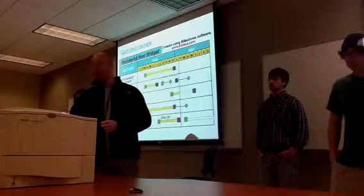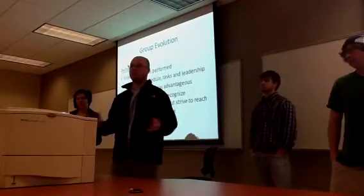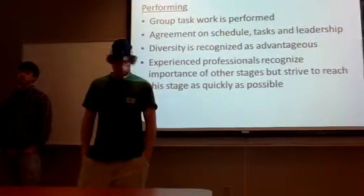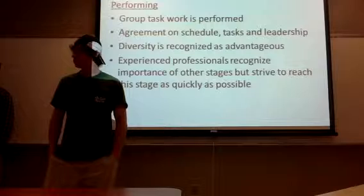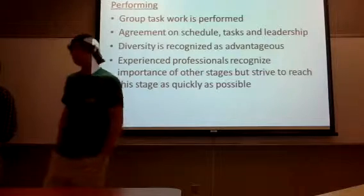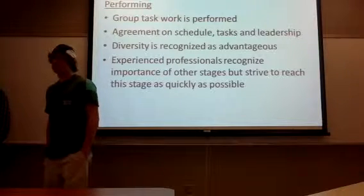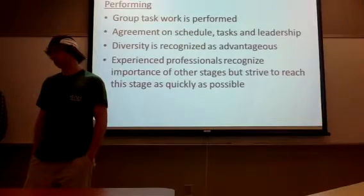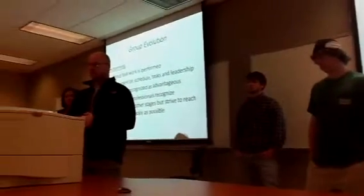After the norming stage, groups get into the performing stage — this is where most of the work is done. Group tasks are assigned, there's finally agreement on schedules and tasks, and people fall in behind the leadership and accept it. Diversity is recognized in the group; it's understood that people have different opinions and disagreements, but under this stage, this is seen as beneficial rather than detrimental. People learn to look at diverse traits and see the positive benefit they bring.